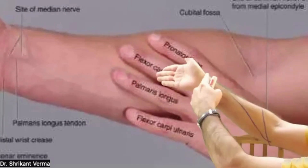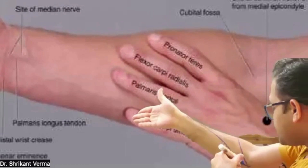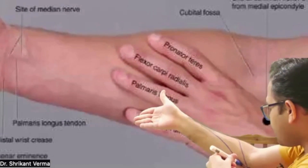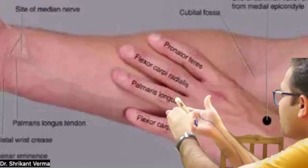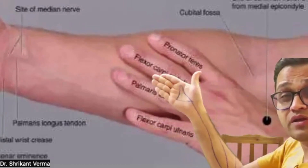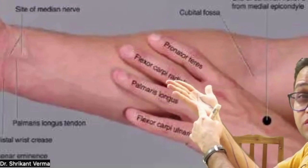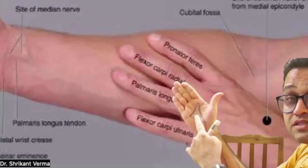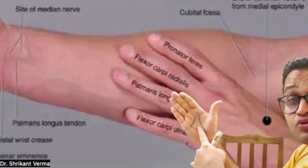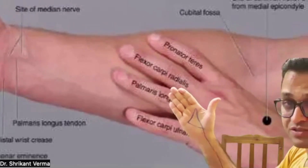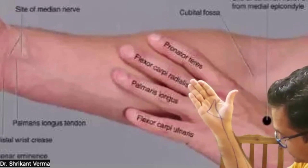Next muscle — flexor, going towards the carpal bone on the radial side, so flexor carpi radialis. The next muscle comes from the same point and reaches to the palm, making a triangular expansion. It is very long — palmaris longus. It makes a flat tendon known as aponeurosis — the palmar aponeurosis.